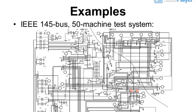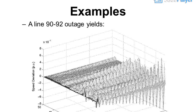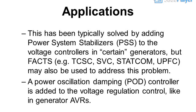Examples using the IEEE 145-bus, 50-machine test system: line 90–92 outage yields inter-area oscillations. This has been typically solved by adding power system stabilizers (PSS) to the voltage controllers in certain generators, but FACTS devices — for example TCSC, SDC, STATCOM, UPFC — may also be used to address this problem. A power oscillation damping (POD) controller is added to the voltage regulation control, like in generator AVRs.